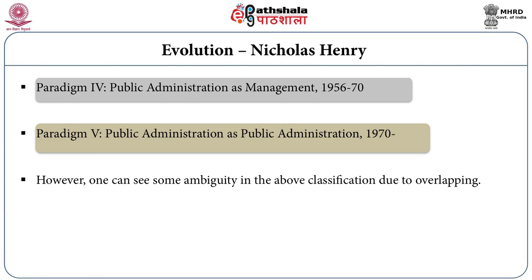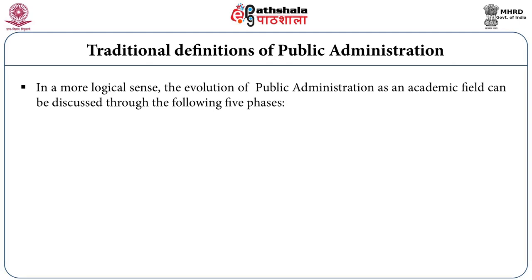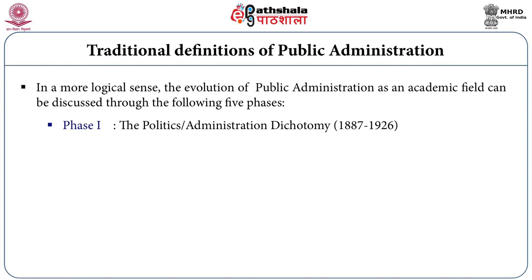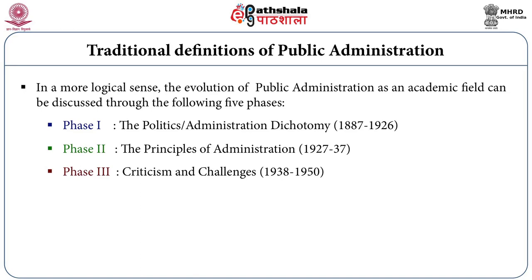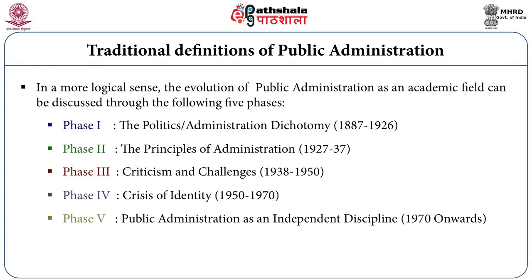There is some ambiguity in that classification due to overlapping phases. In a more logical sense, the evolution of public administration as an academic field can be discussed in five phases: Phase 1, the politics-administration dichotomy, 1887–1926; Phase 2, the principles of administration, 1927–1937; Phase 3, criticism and challenges, 1938–1950; Phase 4, crisis of identity, 1950–1970; and Phase 5, public administration as an independent discipline from 1970 onwards.